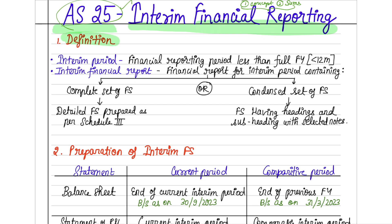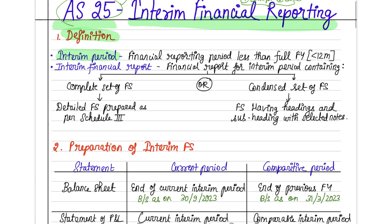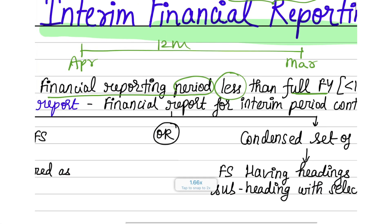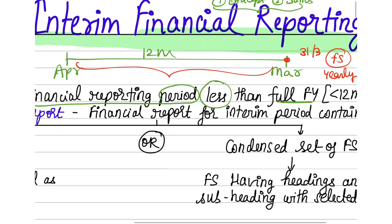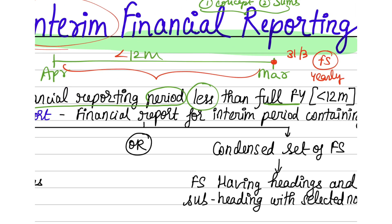Let's start with the definition. First, we speak of 'interim period.' An interim period is a financial reporting period which is less than a full financial year. Normally your financial year is from April till March, which is 12 months, and at the end you submit a financial statement — a yearly financial statement. An interim period is anything less than 12 months: it can be 1 month, 3 months, 6 months, 9 months, 11 months, or any number of months, as long as it is less than 12 months.